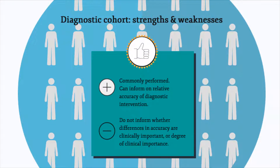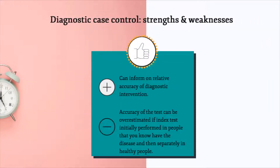Diagnostic cohort studies are commonly performed to assess the characteristics of a diagnostic test, including sensitivity and specificity. While diagnostic cohort studies can inform us about the relative accuracy of an experimental diagnostic intervention compared to a reference standard, they do not inform us about whether the differences in accuracy are clinically important, or the impact on patient outcomes. The accuracy of a test can be overestimated if you perform the index test initially in people you know have the disease and then separately in healthy people — as case control studies do — rather than performing both the index and reference test in the same group of people without knowing whether they have the disease.